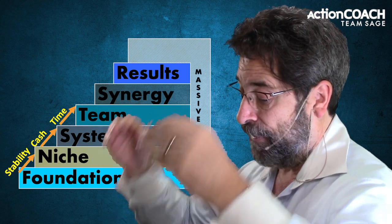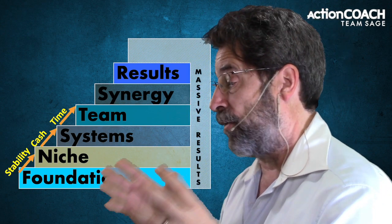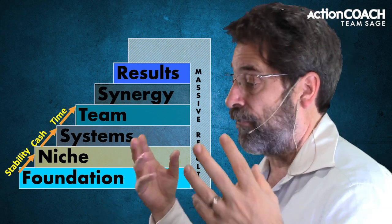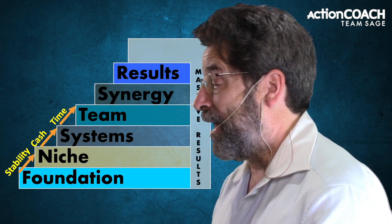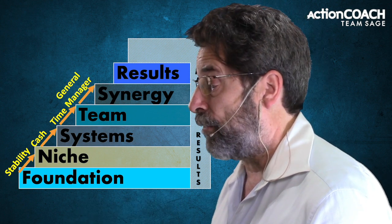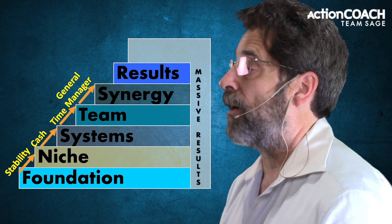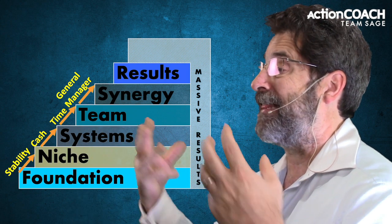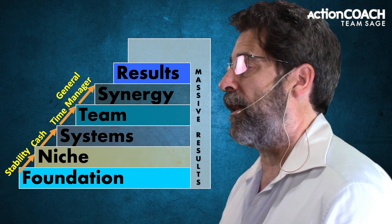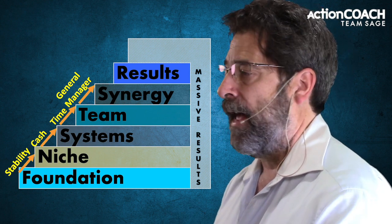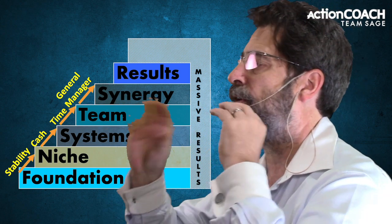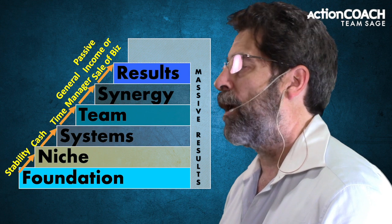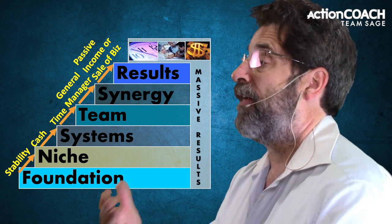In the fourth step, we're going into team — making sure our team can run the business as well as we can, which brings in the structure for growth. Once we have that structure in place, we can bring in team leaders or a general manager so we don't have to be there all the time. That brings us to the fifth step, which is synergy, where we take a step back, turn up the volume, clean up any cracks in the foundation, make sure marketing, systems, and team are all working perfectly. That automatically takes us to the sixth step — results — where we get the business that truly runs without us, giving us the time, money, and freedom we went into business for.